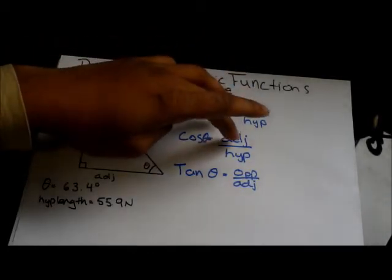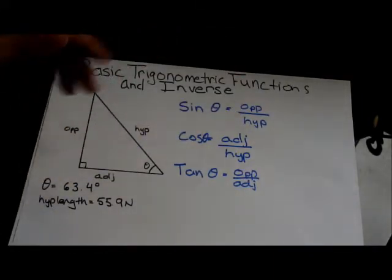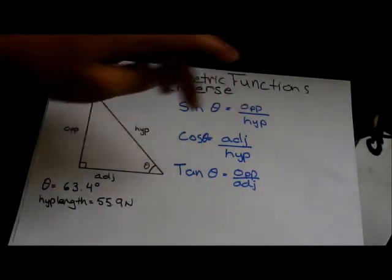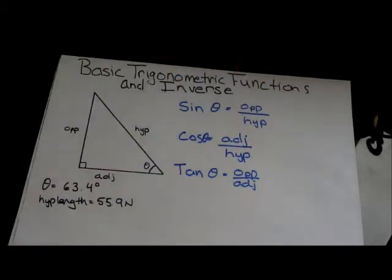We will not use cos or tan because, well, we don't have the adjacent. It's not that we don't have the adjacent. It's because we're not trying to find the adjacent length yet. We have the hypotenuse. Tan, we need to find the opposite, and we don't have the adjacent. That's two unknowns.